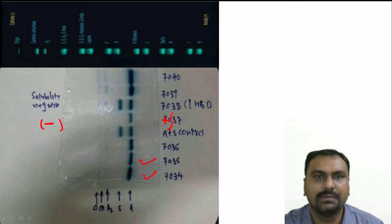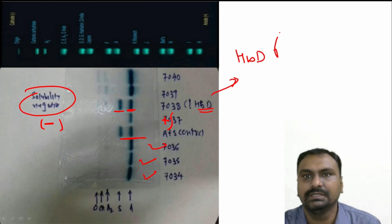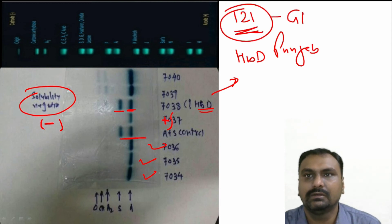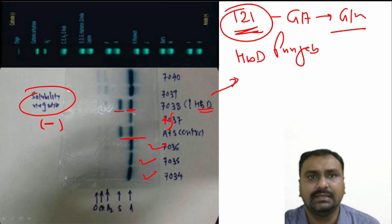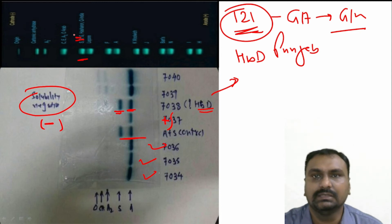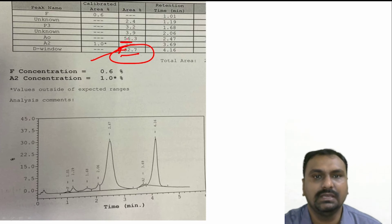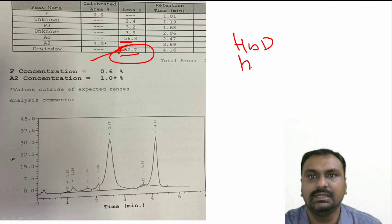You can see here: this is a normal patient, this is the control, and there is a band at the A and S region with a negative solubility test — then it can be HbD Punjab. What is the defect? There is a beta chain mutation at position 121 where glutamic acid is replaced by glutamine. The patient is asymptomatic. So if there is a band at the S region, it can be HbS, HbD, or HbG, which can be differentiated by HPLC. You can see 32% of HbD and 56% of HbA, so it was HbD heterozygous.